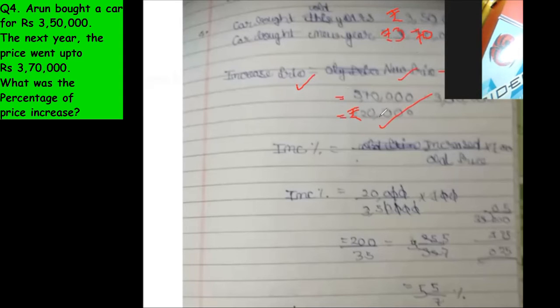This should be in rupees, okay, rupees 20,000. Now increase percentage equals to increase upon old price into 100. Very good, because whenever there is an increase or even decrease in the price, it is always based on the old price.